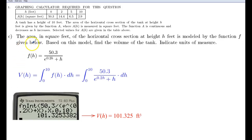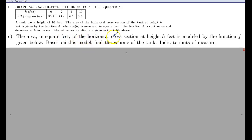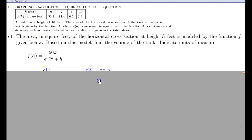Part C. The area in square feet of the horizontal cross-section of H feet is modeled by the function F given below. Here's function F. And based on this model, find the volume of the tank, indicate units of measure.